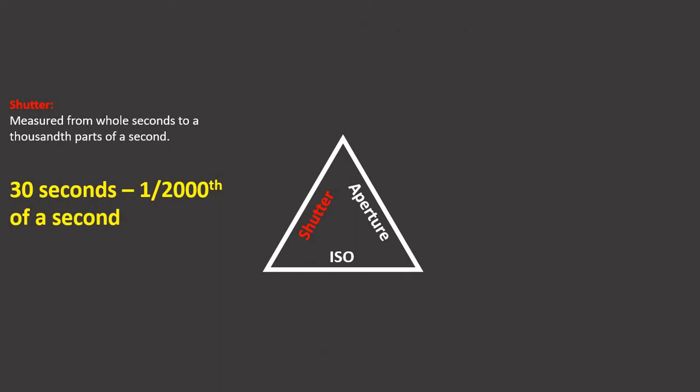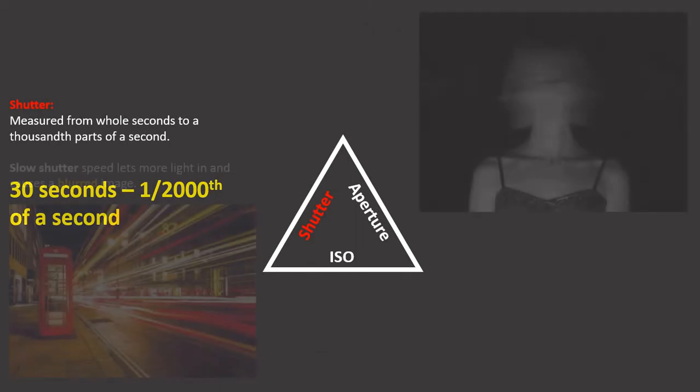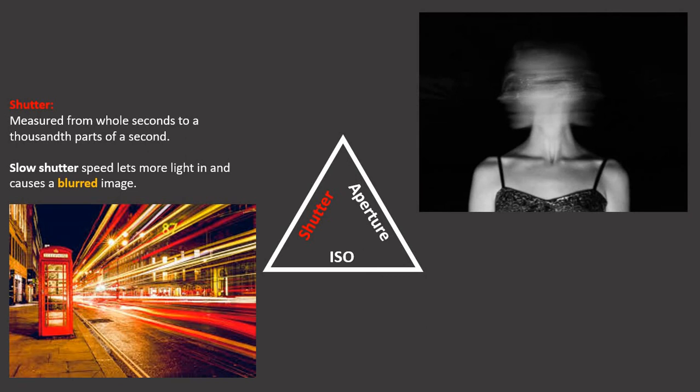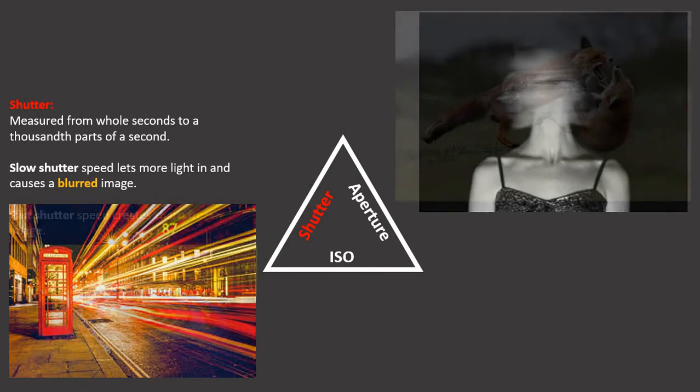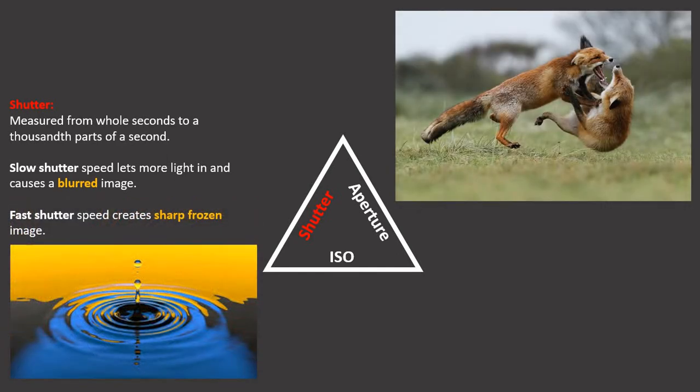The shutter is measured from whole seconds to thousandths of a second. The slower the shutter speed, the more light comes into the camera and creates a blurred image. A faster shutter speed creates a frozen image because less light is able to get off the object into your camera.